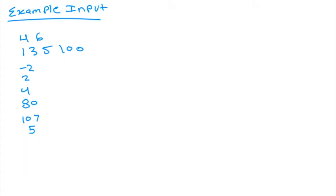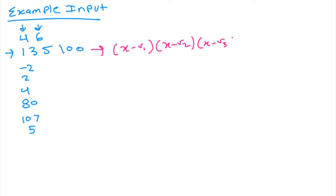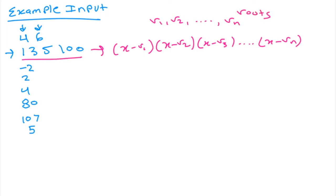Let's quickly go over this problem with a few example test cases. Looking at our example input, we have the number 4, meaning the number of roots, and 6, which is the number of queries. When constructing a polynomial using the given roots, the polynomial will be of the form (x - r1)(x - r2)(x - r3)... up to (x - rn), where r1, r2, ..., rn are the roots. In the input, the roots are given as 1, 3, 5, and 100.